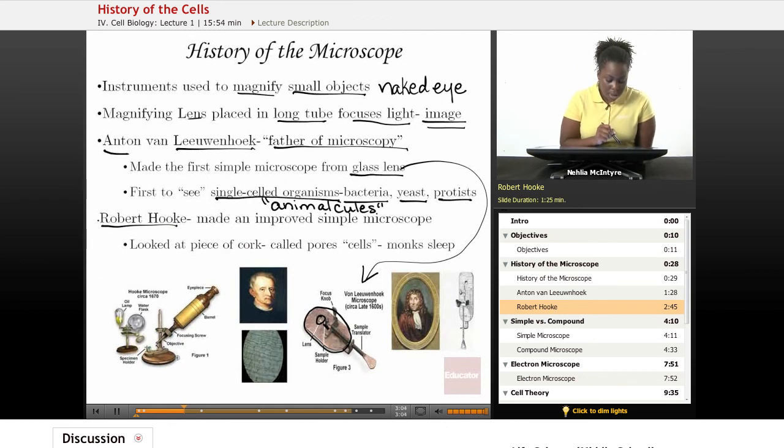He used an eyepiece that had a lens, the magnifying lens, and it was attached to a long tube. And he also had a stage or a plate where a specimen was held. And his microscope had an objective, which had a particular magnification on it, which helped him to see also very small objects.